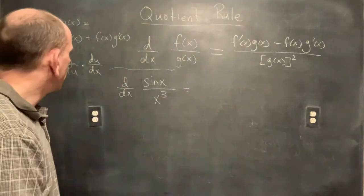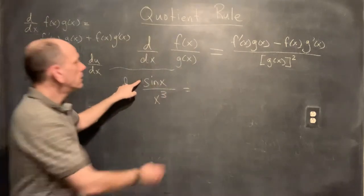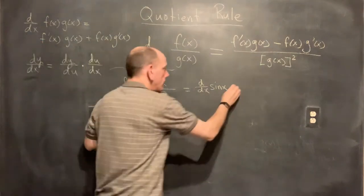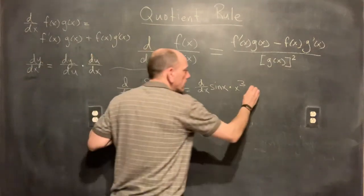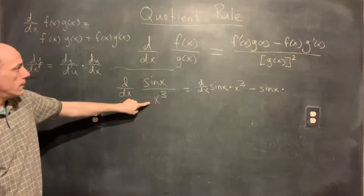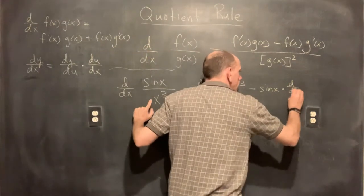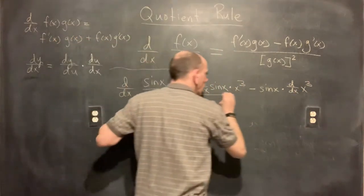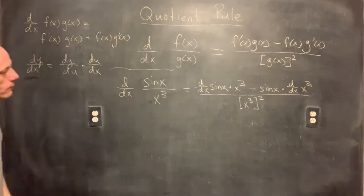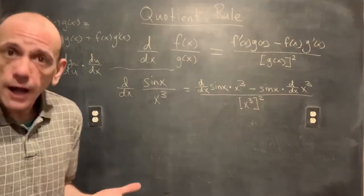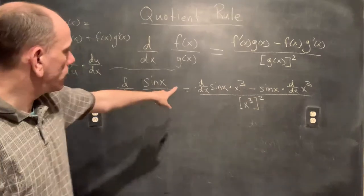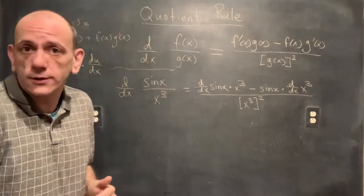Following the formula: derivative of the first — the derivative of sin(x) — times the second, x³, minus the first, sin(x), times the derivative of the second, d/dx[x³]. All of this is over the denominator squared, (x³)². We've applied the quotient rule formula; now we still need to actually compute those derivatives.